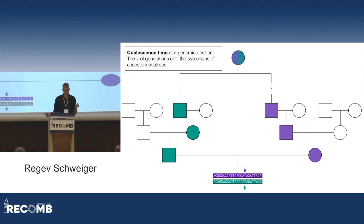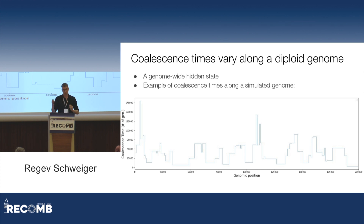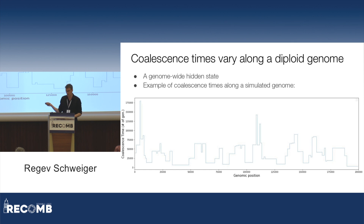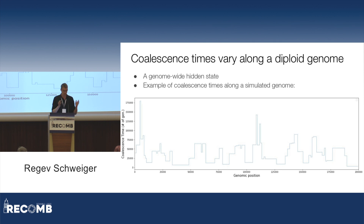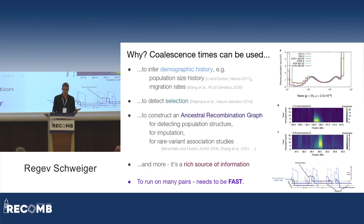That's a very important statistic. Because chromosomes are mosaics, as we move along the genome those two chains of ancestors shift and change, so the coalescence time also changes. Here is a simulation: the x-axis is genomic position, the y-axis is coalescence time, and you can see that as we move along the genome, it's like a hidden state that changes in chunks — this has to do with where recombinations are.